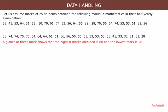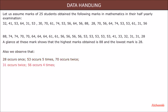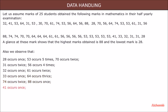Also we observe that 28 occurs once, 53 occurs five times, 70 occurs twice, 31 occurs twice, 56 occurs four times, 32 occurs once, 61 occurs twice, 33 occurs once, 34 occurs once, 64 occurs thrice, 74 occurs twice, 88 occurs once, and 41 occurs once.